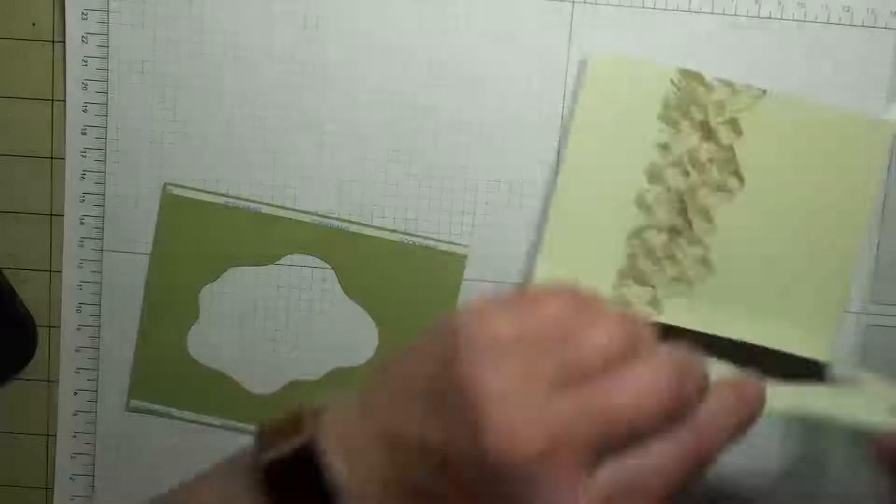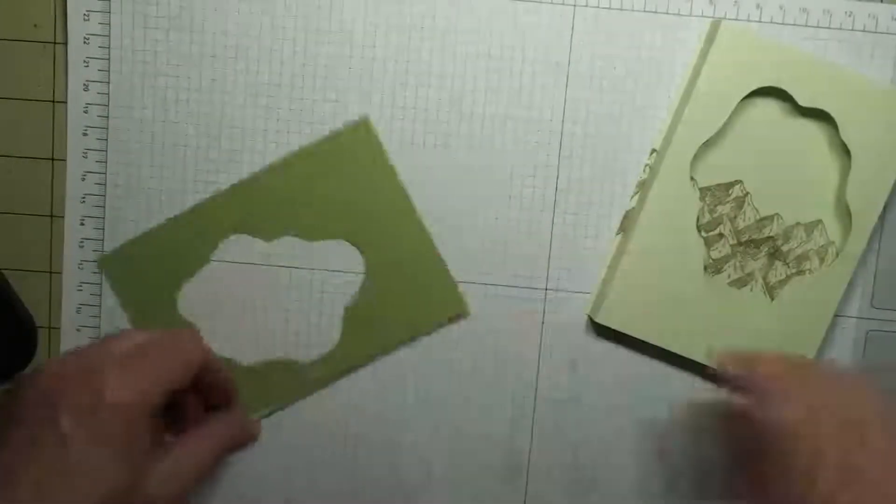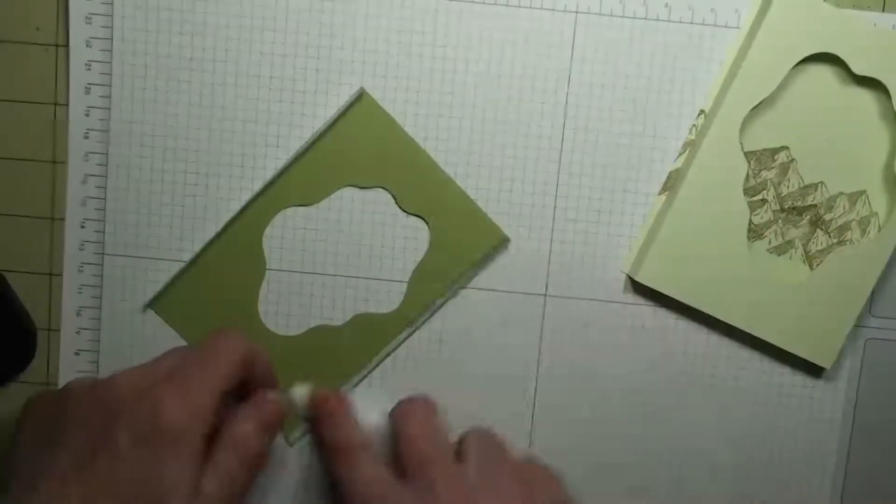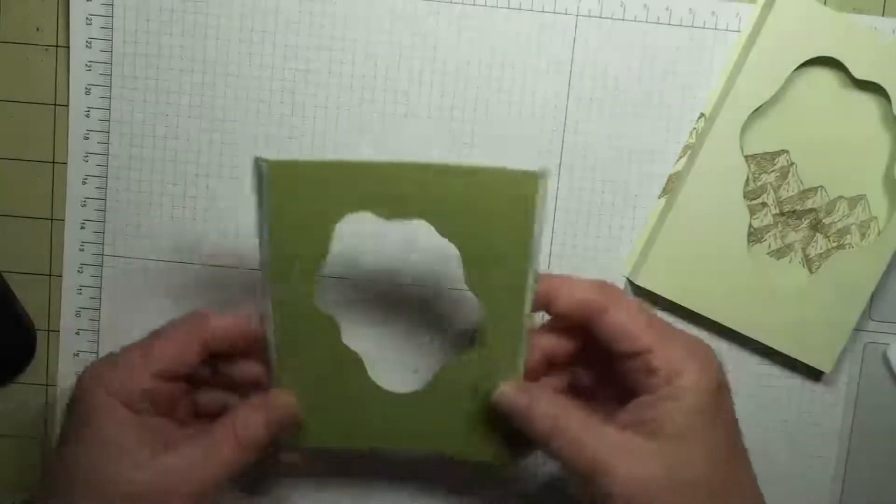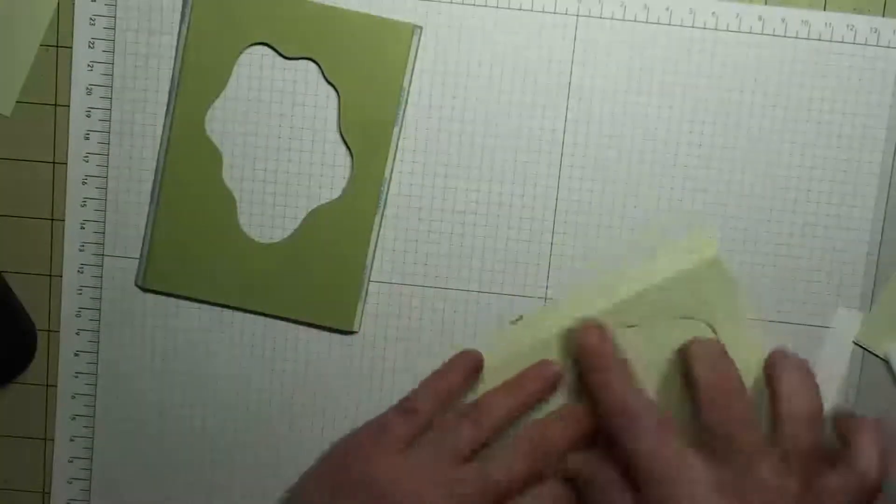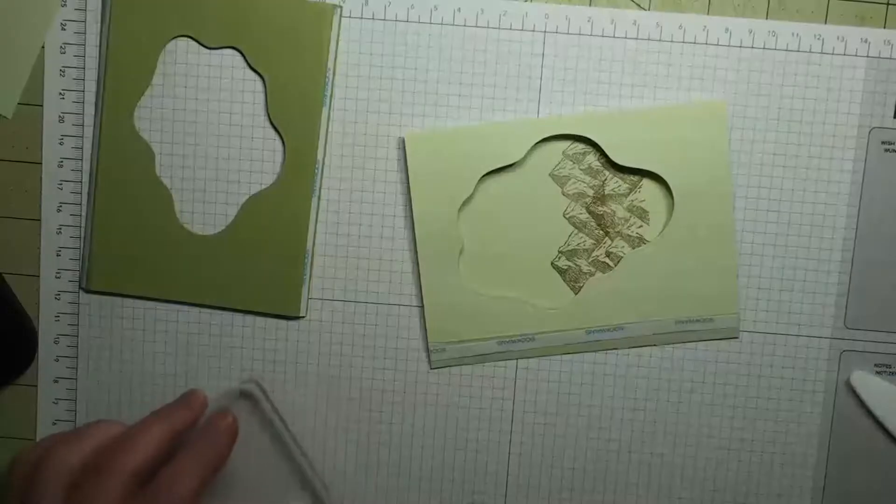Okay, so what we've got is you want to fold and burnish all your score lines, even on this little piece here, the quarter inch score lines. And then I'm going to put strong adhesive down inside these two score lines, and then I'm also going to put adhesive right here on this score line.